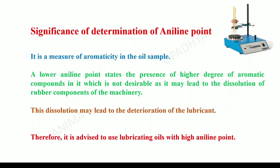If such a lubricant with high aromaticity — that is, low aniline point — is applied to machines having rubber parts, then these rubber parts will get dissolved in the lubricating oil. The lubricating oil will then lose its lubricating property and get deteriorated due to the dissolution of rubber into it. It will also reduce the life span of the machinery. Therefore, determination of aniline point is extremely important before applying any lubricant to a machine, especially if it has parts made up of rubber, parts coated with rubber, or if the gaskets or seals are made up of rubber.